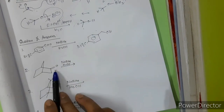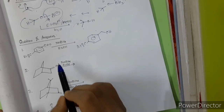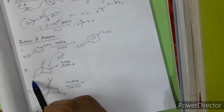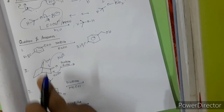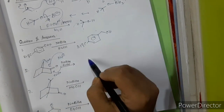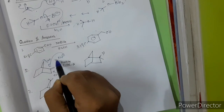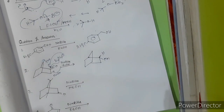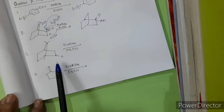For a norbornane-type molecule, I have already discussed in the LiAlH4 lecture which side the nucleophile attacks. In this case, the nucleophile prefers to attack from the exo side, because the exo side is sterically free. The hydride H⁻ attacks from above (exo), breaking the carbonyl pi bond, giving this kind of compound. I have already discussed this in the LiAlH4 case — the same thing happens here.